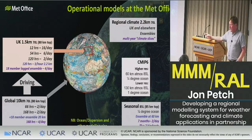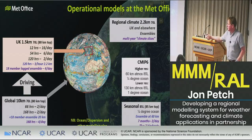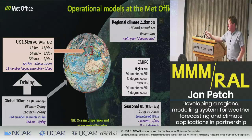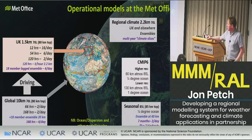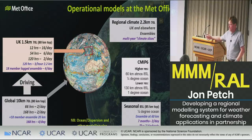We use the global model to drive a 1.5-kilometre grid length model over the UK. That's run every hour, giving forecasters a constant refresh on the forecast. Twice a day it goes out to five days, but it's run every hour out to at least 12 hours. It hasn't always got fresh driving conditions since we only run the global four times a day, but there is 4D-var data assimilation in the global model bringing in new observations.